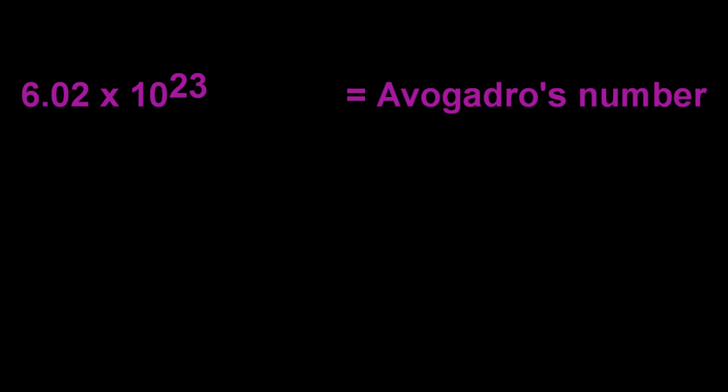People do struggle with this, but it is just a number. It's a big number, but it's just a number. Now, the IB could make it a little more complicated for you, though they never have, but it is in the syllabus that if you have the unit per mole, it is now Avogadro's constant.